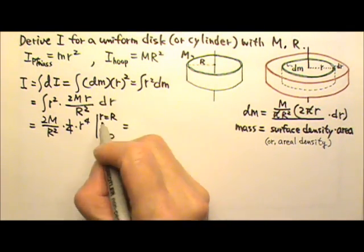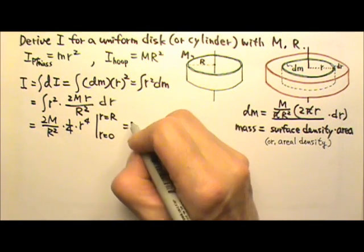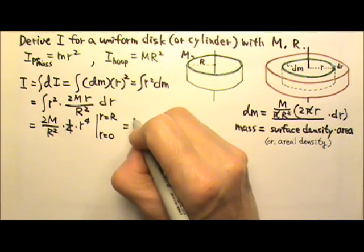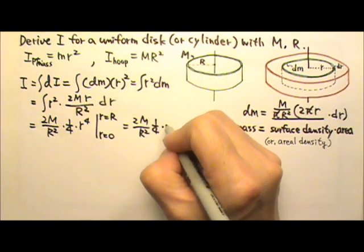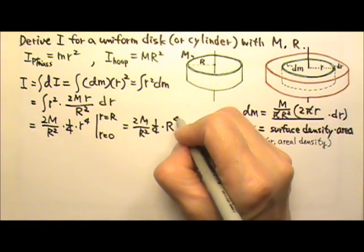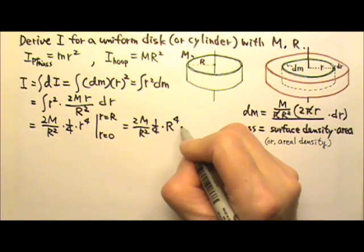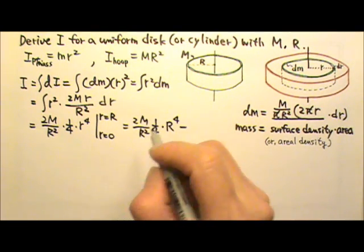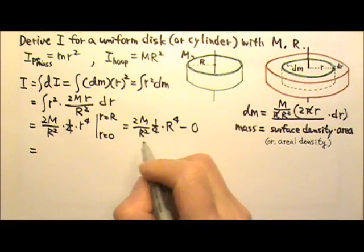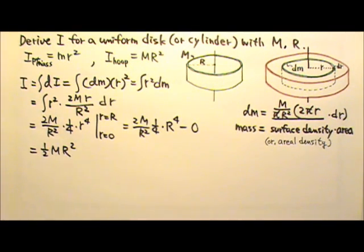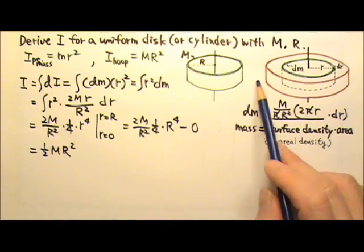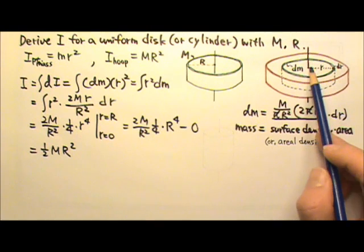So now we can plug in the upper limit. And that gives me 2m over r² times 1/4 times the big R to the 4th, minus what we get when we plug in the lower limit, which is 0. So if we simplify this, we will get ½mr². This is the rotational inertia of the uniform solid disk about its cylinder axis.